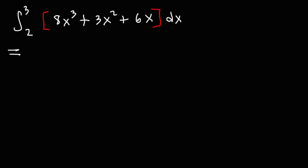Now let's continue on with this example. So to find the antiderivative of 8x cubed, first we're going to rewrite the constant 8. Then we're going to add 1 to the exponent. 3 plus 1 is 4. And then we're going to divide by 4. Now let's repeat this process for the next one. So the antiderivative of 3x squared is going to be the constant 3 times x raised to the third power divided by 3.